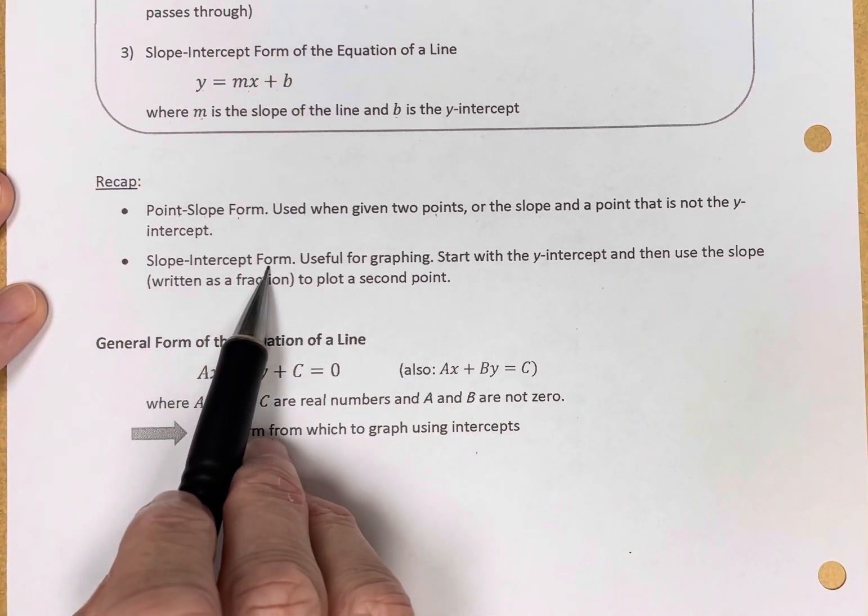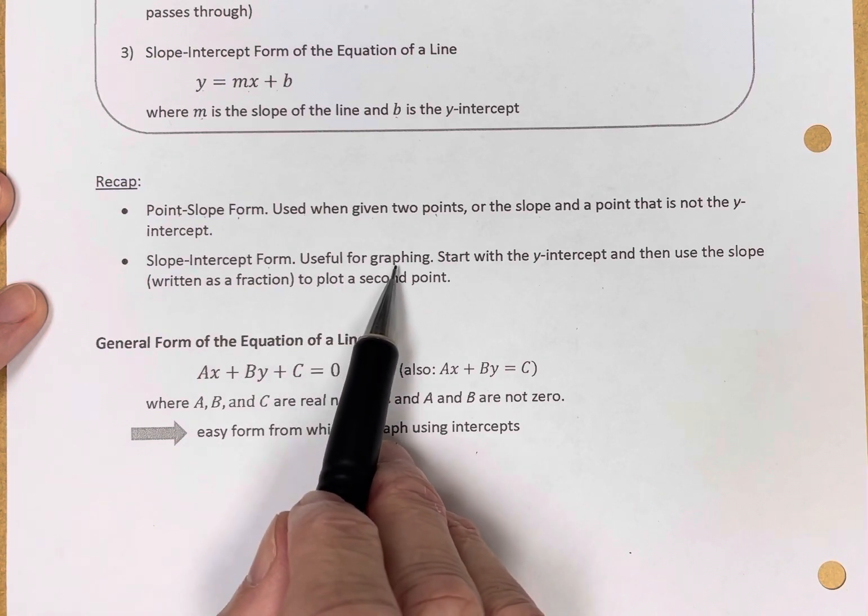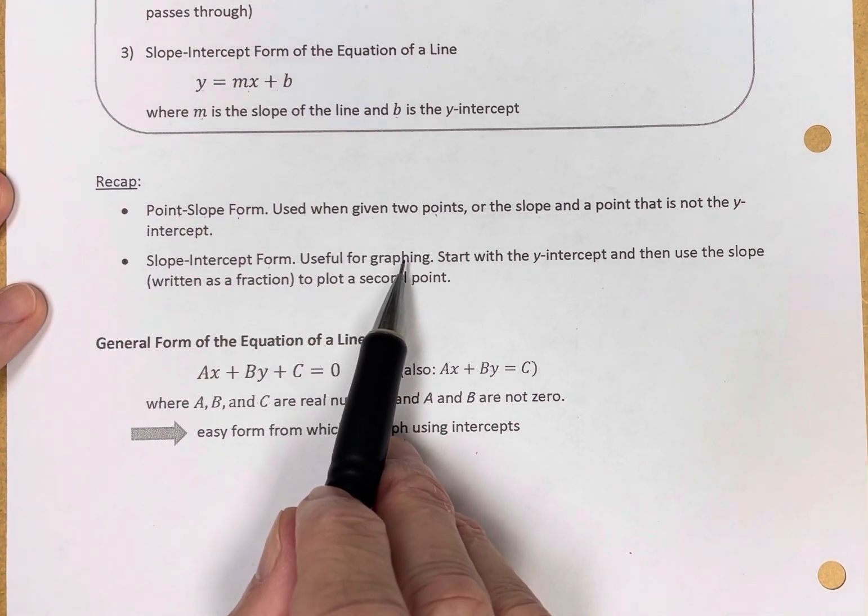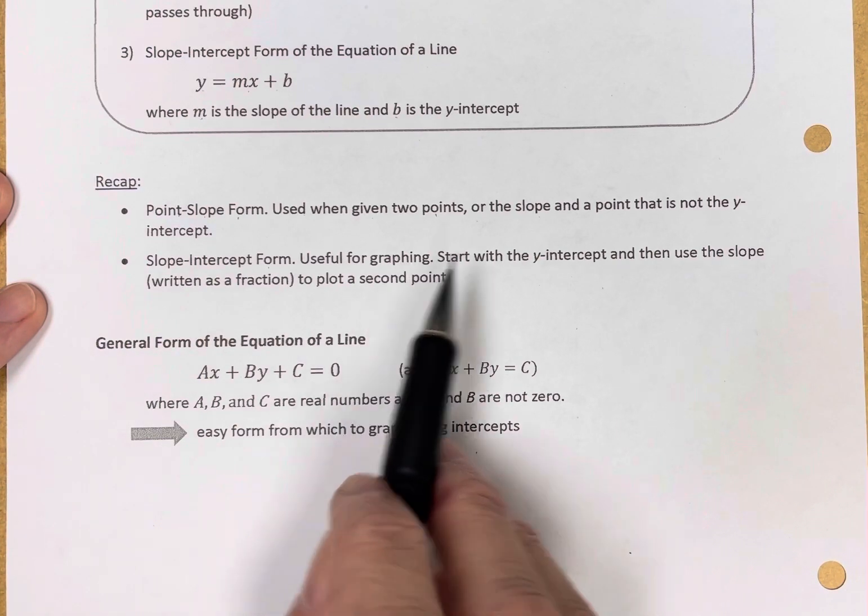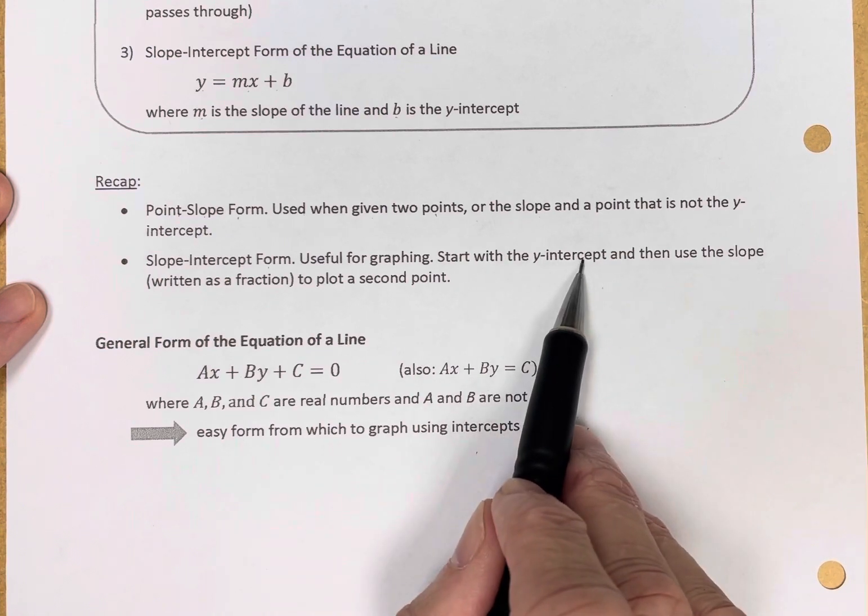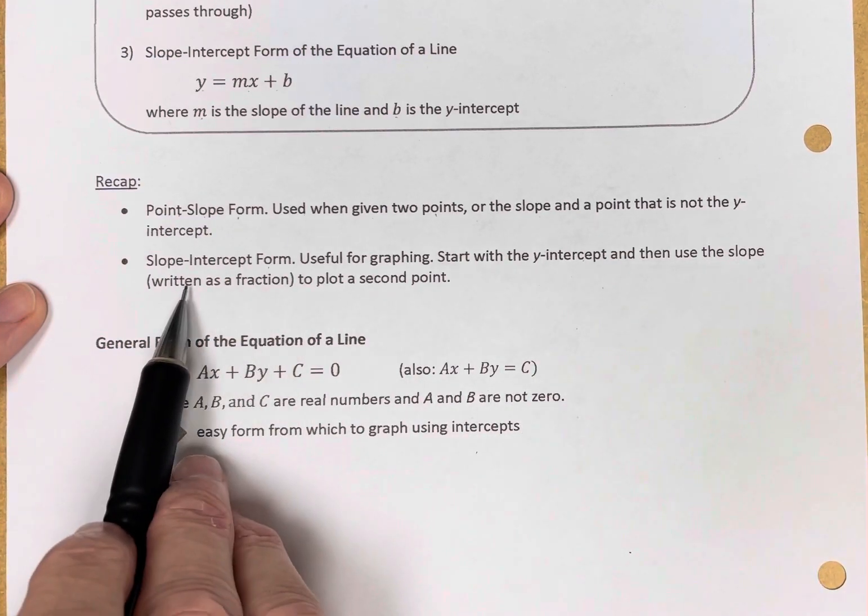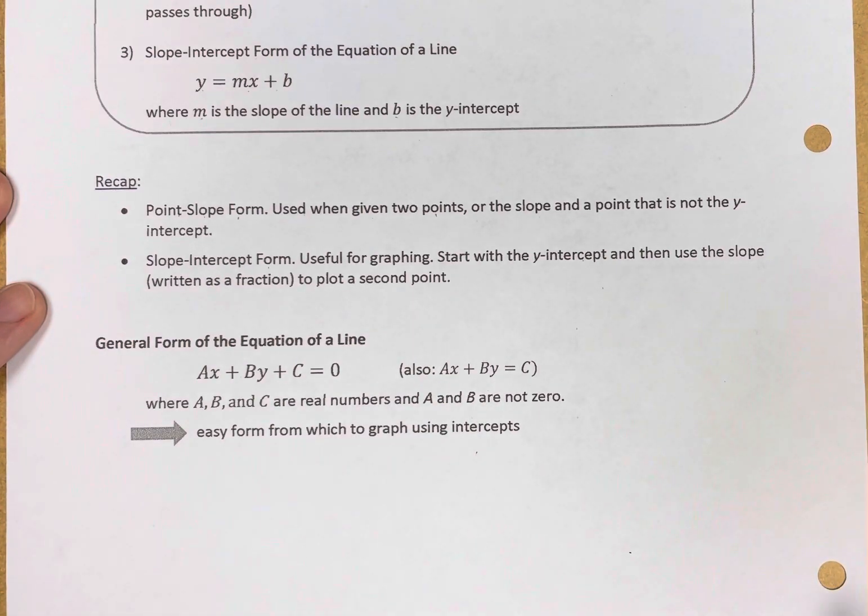The slope-intercept form is very useful for graphing, particularly with many graphing devices that ask you to graph in a y equals format. Graphing by hand, we start with the y-intercept, and then we use the slope, written as a fraction, to plot a second point.